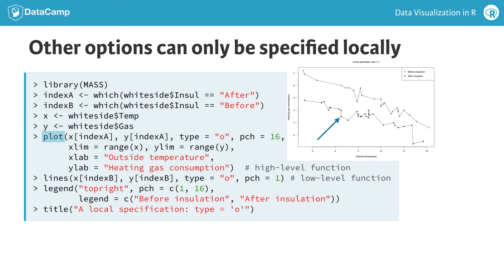Note that this initial plot has lines overlaid with solid circles, and by specifying xlim and ylim explicitly, it leaves room on the plot for the second line. This second line is added by the low-level graphics function lines, again as a line overlaid with points.